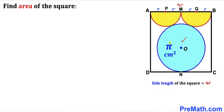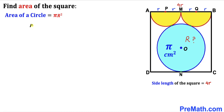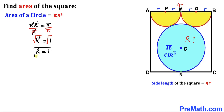The area of the blue circle is given as π centimeter square. Assuming the radius of the blue circle is uppercase R, we use the area of a circle formula: area equals π R squared. Setting π R squared equal to π and dividing both sides by π gives R squared equals 1. Taking the square root, the radius R equals positive 1 centimeter.